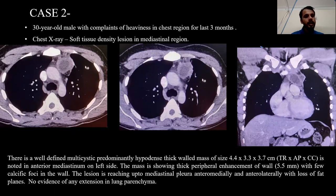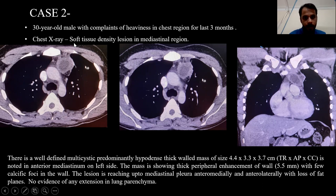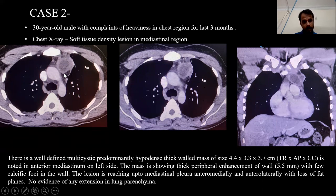Coming to the second case — a 30-year-old male with complaints of heaviness in the chest for the last three months. Chest X-ray showed a soft-tissue density lesion in the mediastinum. Subsequently, CT chest was done. We can see there is a well-defined cystic mass with thick peripheral enhancement along with internal hyperdense areas, having fat-attenuation within the mediastinum. The mass is small in size, well-defined with internal cystic areas, no significant mass effect, and not invading adjacent structures. This is a case of mature teratoma.